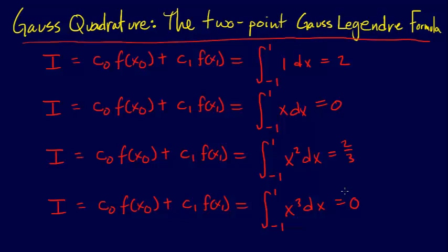And so now this is great, because we have four equations, and we can solve them simultaneously for our c₀, c₁, and our x₀ and x₁. And when we do that, we get c₀ equals c₁ equals 1, and we have x₀ equal negative 1 over the square root of 3, and x₁ equals 1 over the square root of 3.